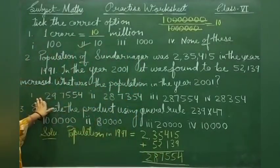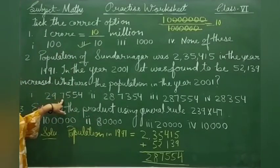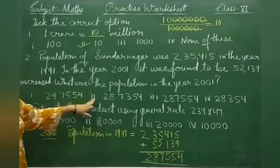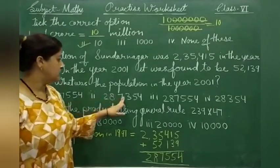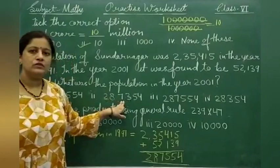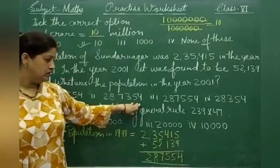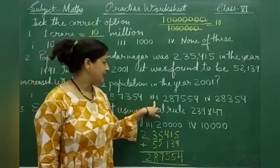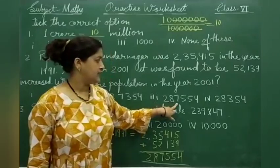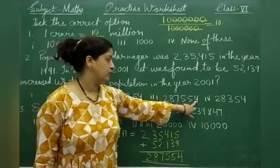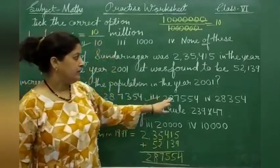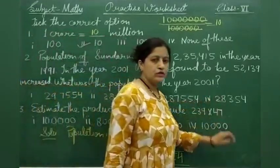Option 1 is 2,97,500 — which is wrong. Option 2 is 2,87,354 — is it correct? No. Option 3 is 2,87,554 — this one is correct. You can pick the correct one. Option 4 is also wrong.